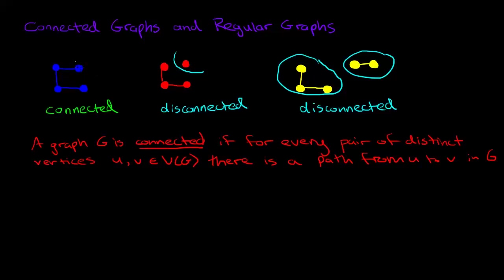Pick any two vertices you like and you'll always find a way to get from one to the other. If you look at any of our disconnected examples and you pick a particular vertex in one of the connected parts and another vertex in another part, you'll see that there's no way to get from one to the other in this graph, and that's why they are disconnected.